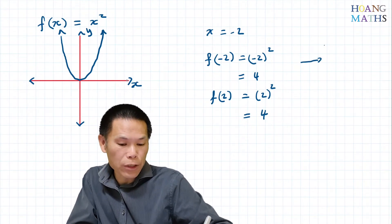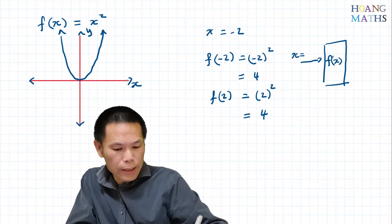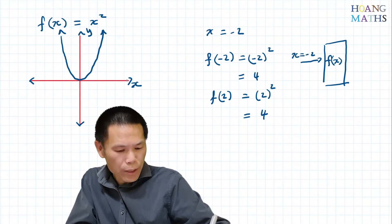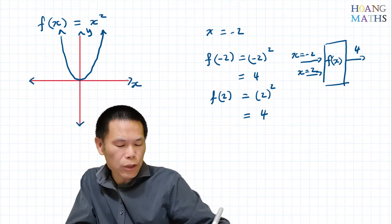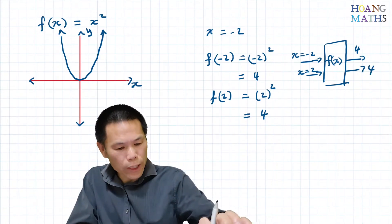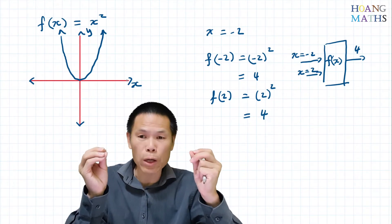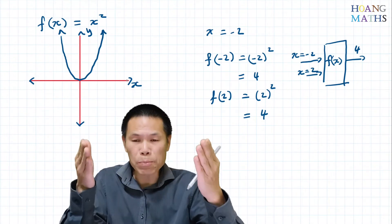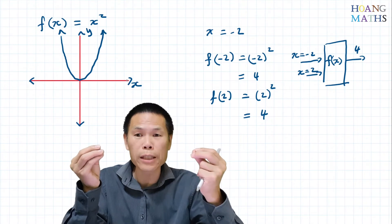We can interpret it like this: we have a function f of x, and x equals negative 2 goes in and the output is 4, and x equals 2 also gives output 4. So we have two inputs and one output — that's why we call it a many-to-one function. This means the function cannot have an inverse.